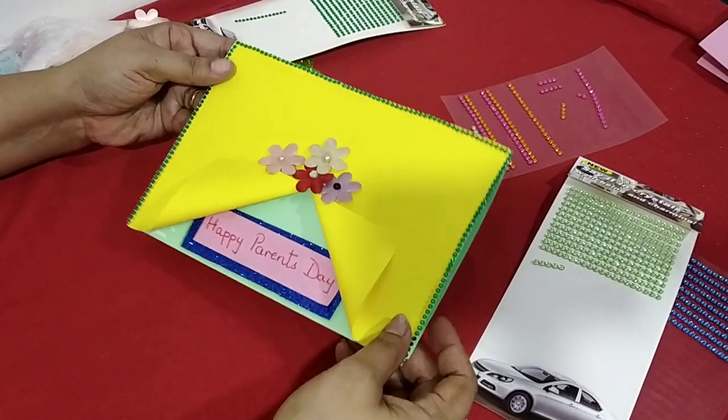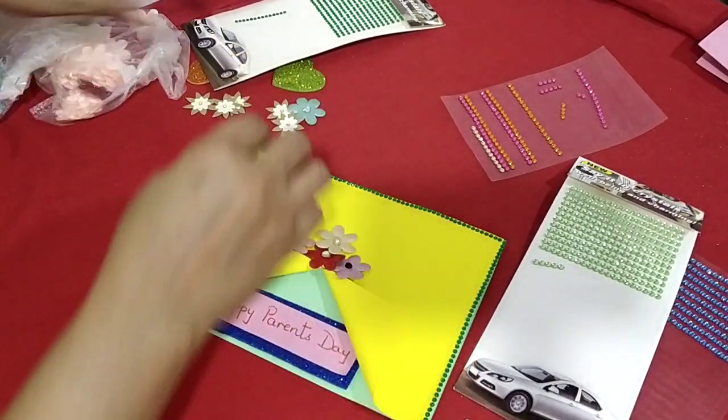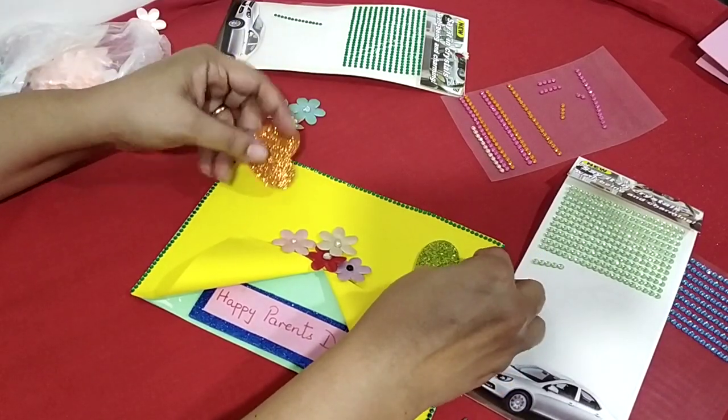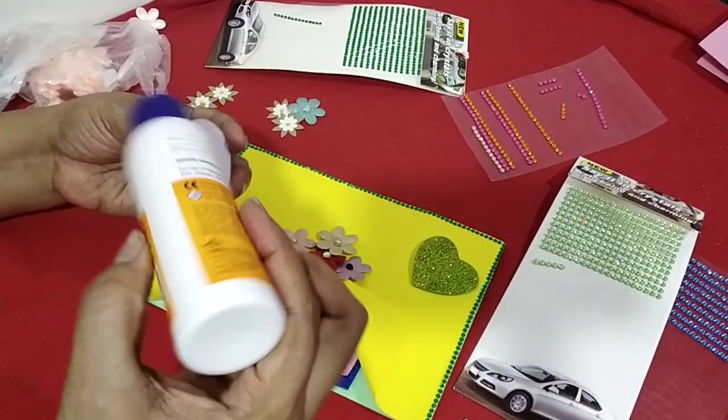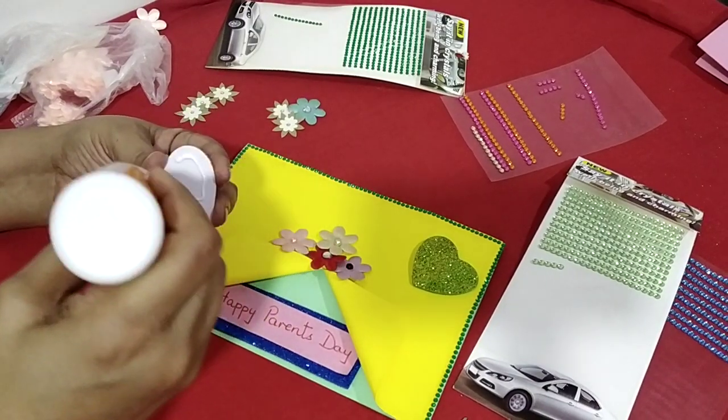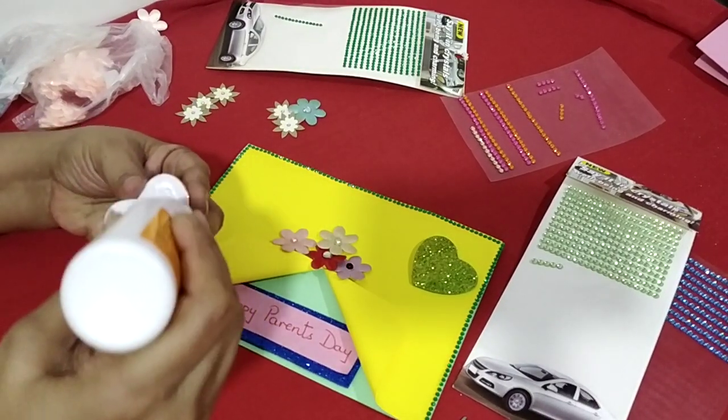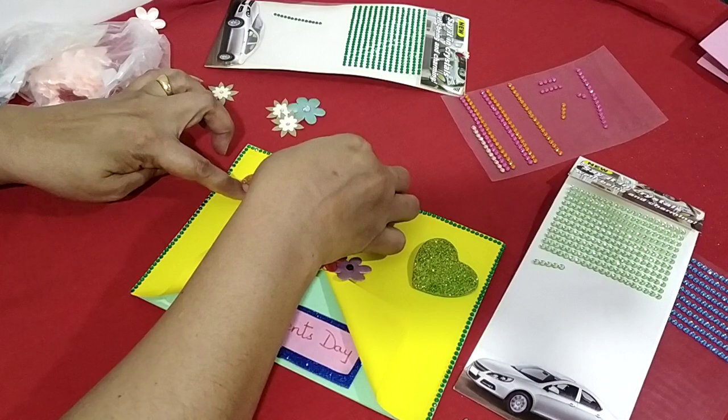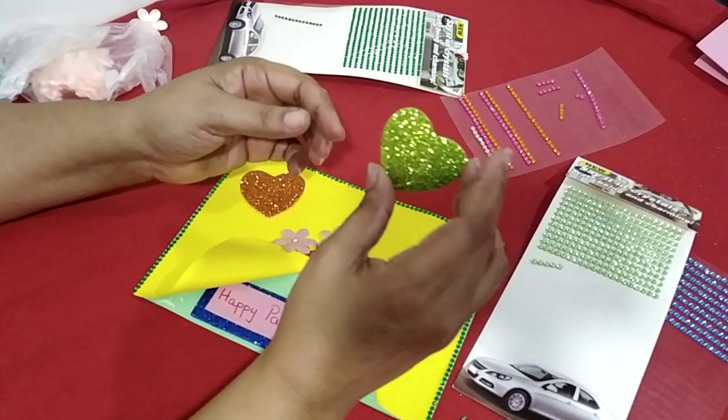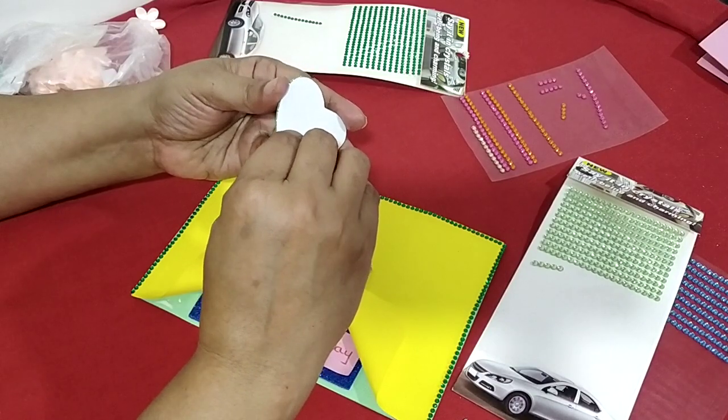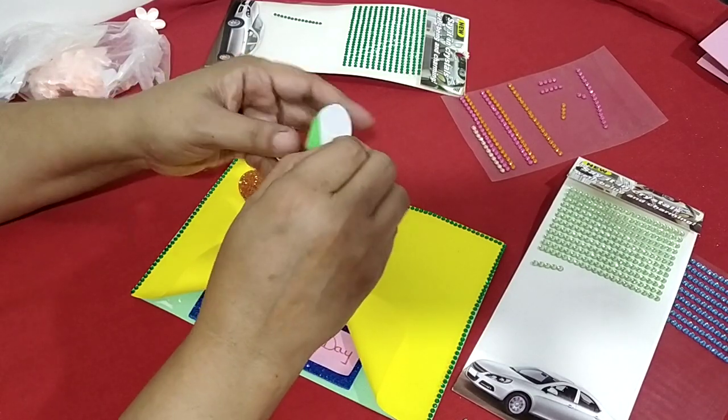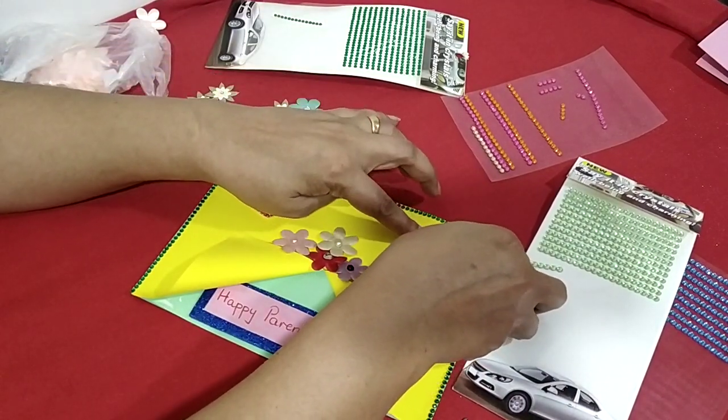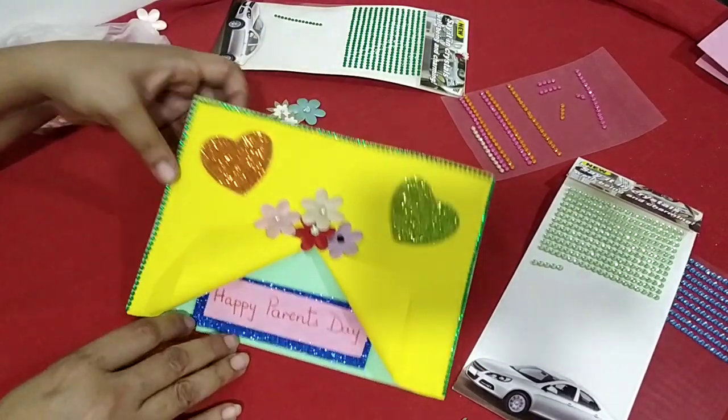So your card is ready now. If you want to add some more decoration, you can just put a little heart, one here and one here. Children, you get this in the shop. You can even peel it off or you can stick it. See, you can peel it off and then stick it.